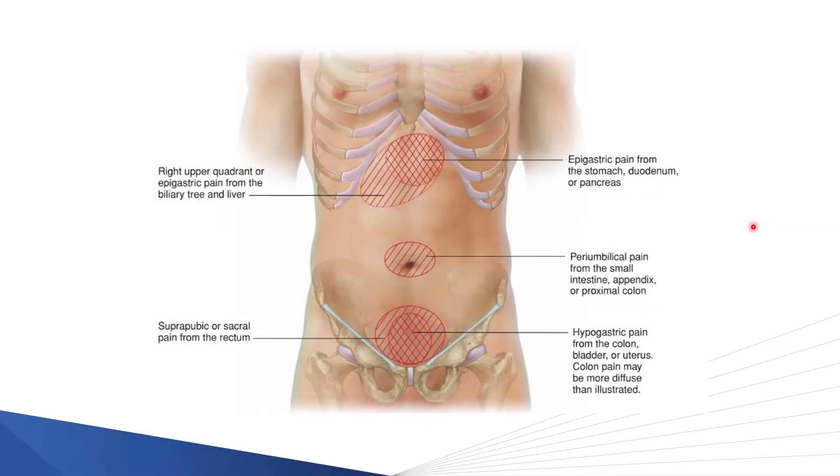Because visceral pain is poorly localized by the patient and often presented in the midline, it's really quite challenging to establish which organ is the culprit. As you can see from this figure, patients who experience pain in the epigastric region could have pain originating from the biliary tree or the liver in terms of hepatomegaly stretching the capsule. Likewise, the pain can be caused from the stomach and duodenum, or the pancreas, which is a solid organ surrounded by a capsule.